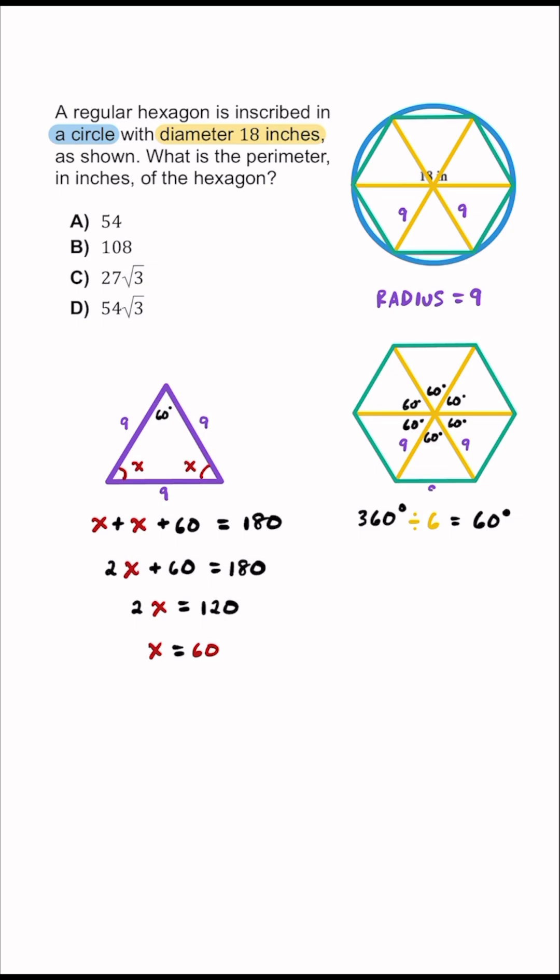And so if you go back to our hexagon, we can label all of those outside dimensions of this hexagon as going to be 9 inches. So the question is, what is the perimeter of this hexagon?